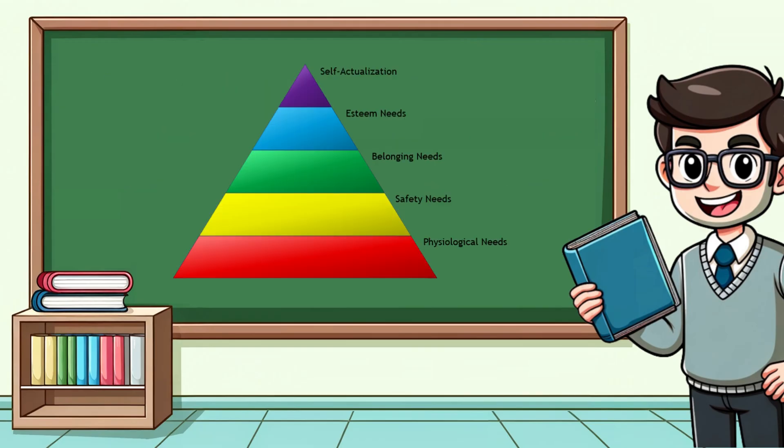Self-actualization is the term that Abraham Maslow used to explain the optimal state of humanity. To reach self-actualization, you need to have a range of base needs met, such as comfort, food, shelter, safety, a sense of belonging, and strong self-esteem.